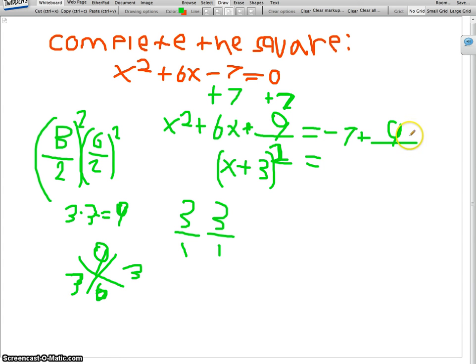So it's 2, because 9 is greater, so x plus 3 squared equals 2 is your answer. So that's how you complete the square for this.